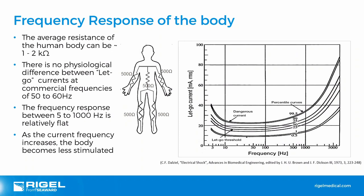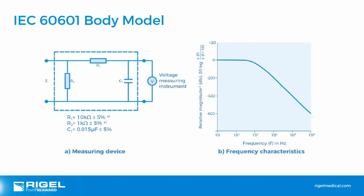Here is a graph showing the frequency response of the body to electric shock. As frequencies exceed 100 hertz, the body becomes less stimulated exponentially. There is also the total impedance of the body, which is reflected in the electrical safety standards for the body model of measuring devices. Impedance is related to resistance but also to reactance at different frequencies, which is why a measuring device isn't just a simple resistor.